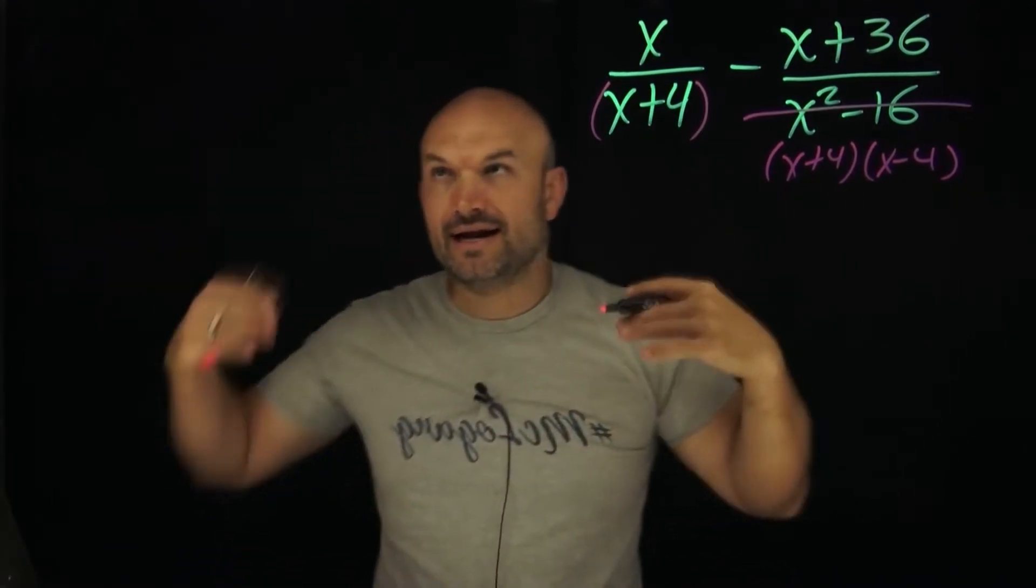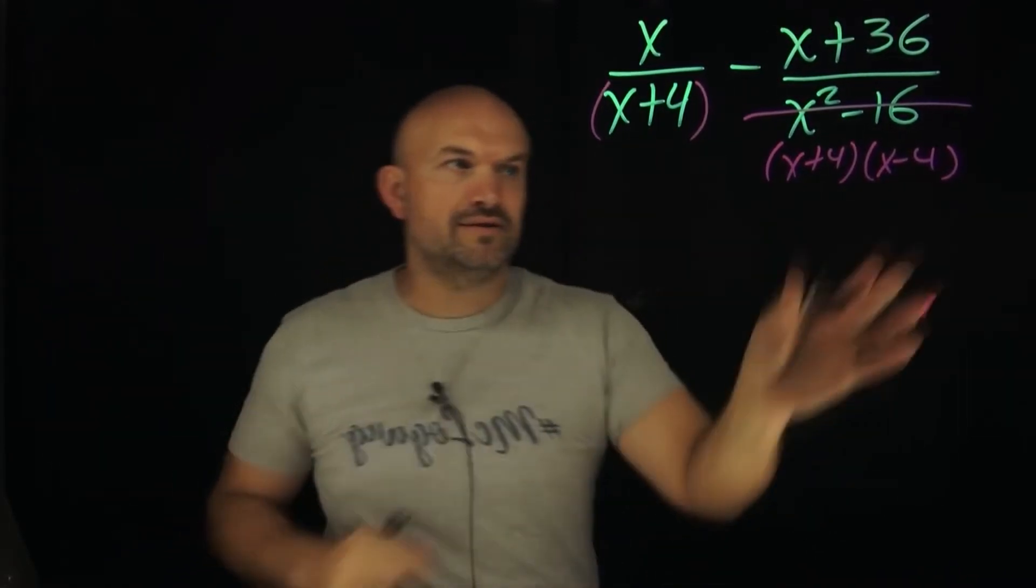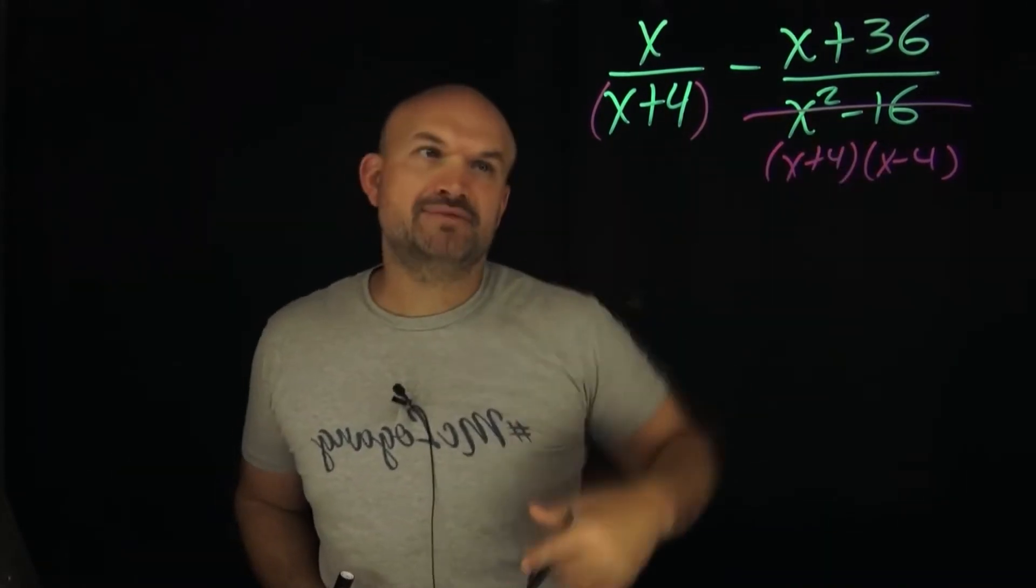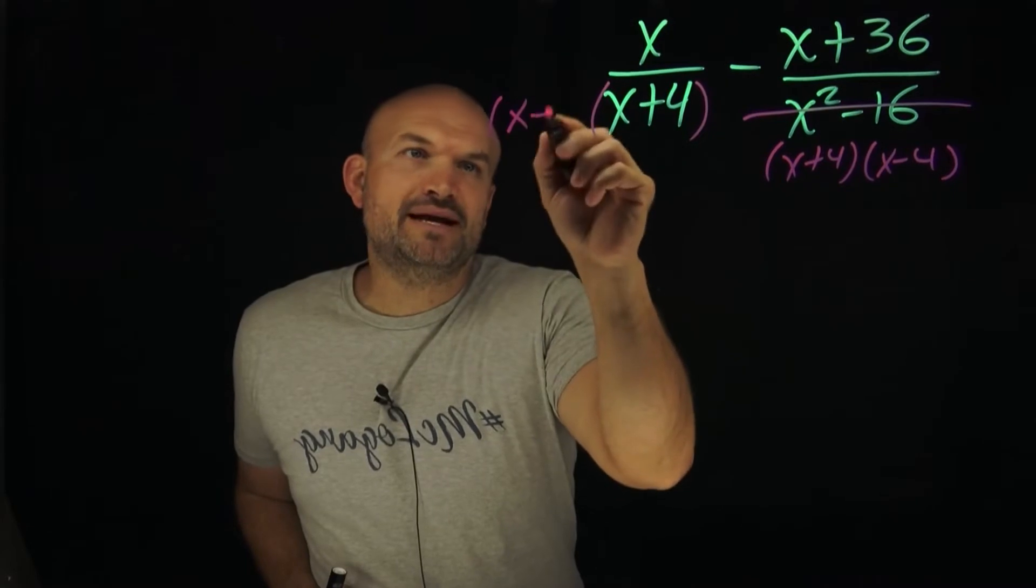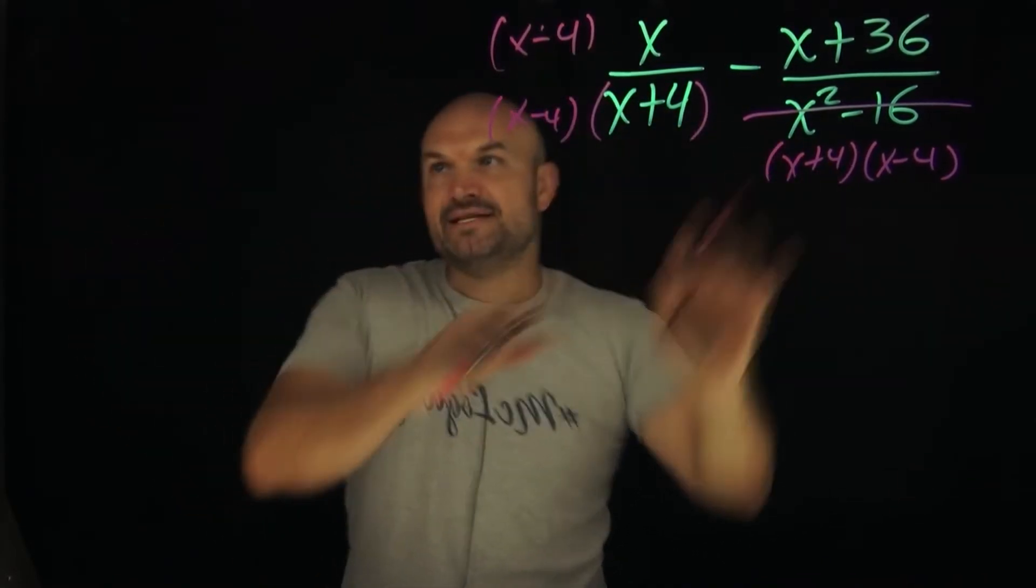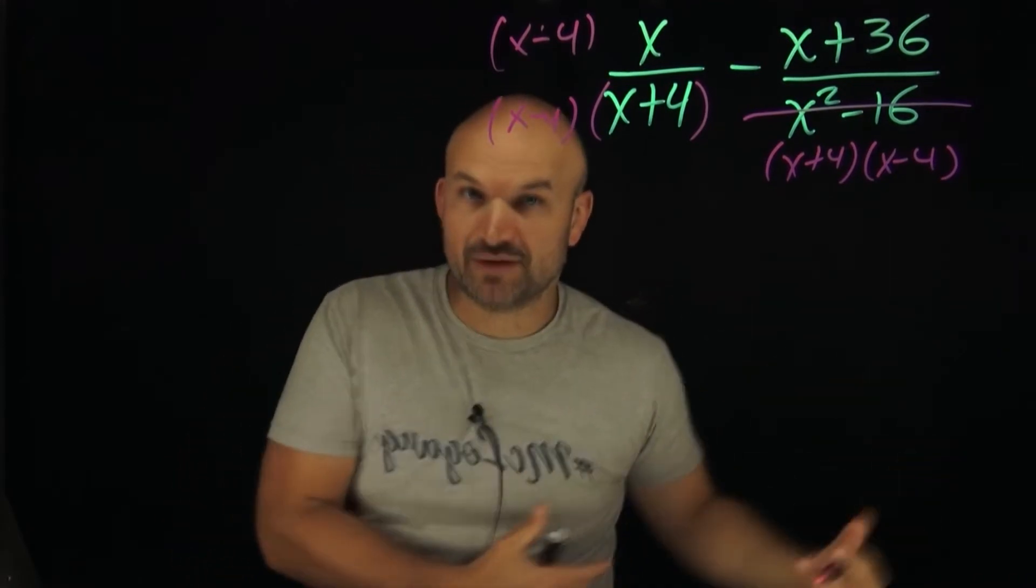And you got to say, all right, I need to have a common denominator. Well if this is x plus 4 and this is x plus 4 times x minus 4, then what do I need to do to produce that common denominator? All I need to do is multiply this by x minus 4 on the bottom as well as on the top. Now I'm going to have my common denominator which I'm going to call x minus 4 times x plus 4. So that's my LCD.